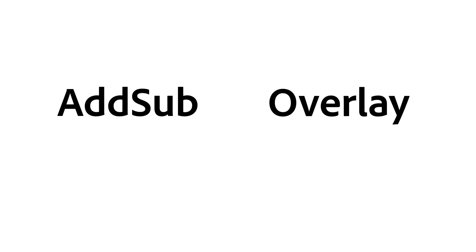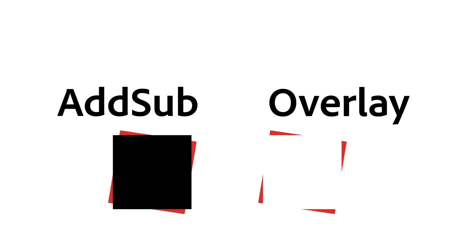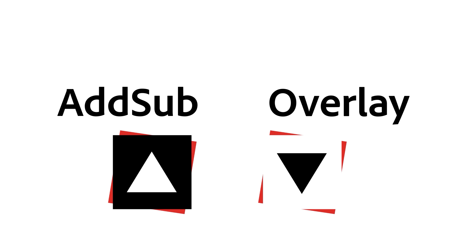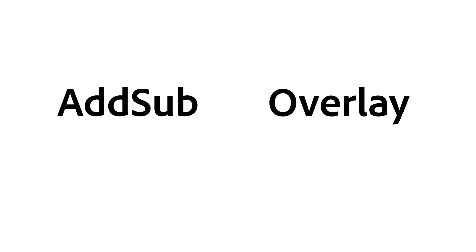Add Sub and Overlay are two special, very useful blending modes. They can darken and brighten at the same time, depending on the values of the top component. All other blending modes so far can only darken or only brighten. They're not the easiest to use, but are essential modes to understand.